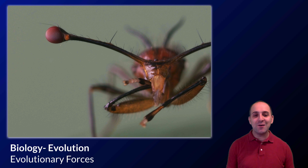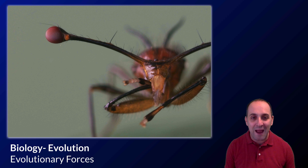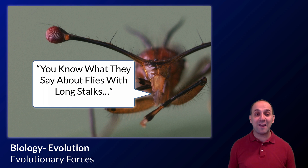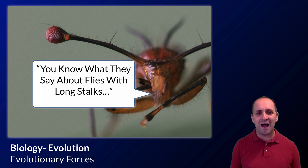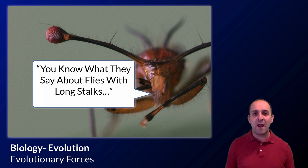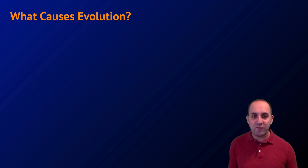Hi and welcome back to our evolution unit. In this video we're going to talk about evolutionary forces. This happy-looking fellow is a male stalk-eyed fly — the eyes of male stalk-eyed flies develop at the end of long stalks that extend out from their head. For a long time this was puzzling, but over the course of this video we can start to understand how evolution could drive the development of such an odd phenotype. The question we're going to answer is: what causes or what is driving evolution in a population?